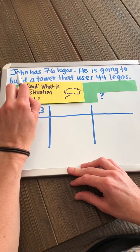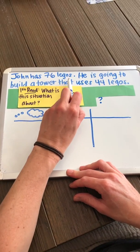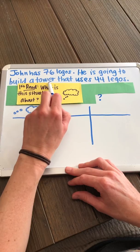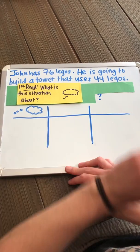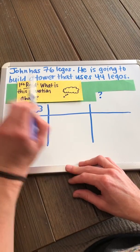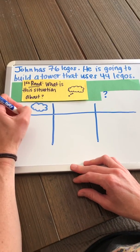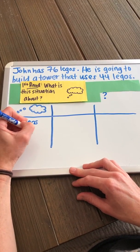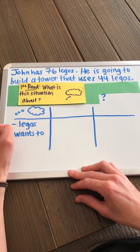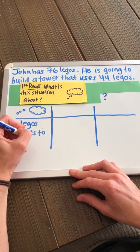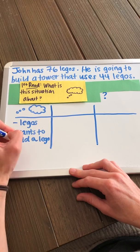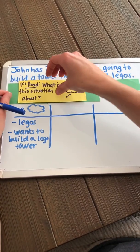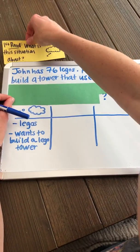Let's read it. John has 76 Legos. He is going to build a tower that uses 44 Legos. What is this situation about? I know it is about Legos. I also know that John wants to build a Lego tower. So that's the first time I've read it — thinking about what the situation is about.